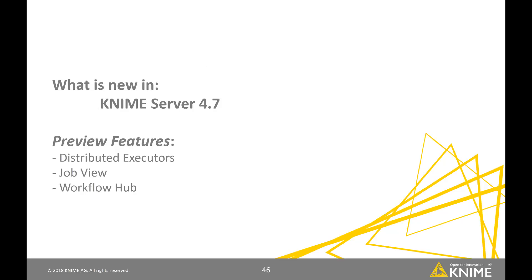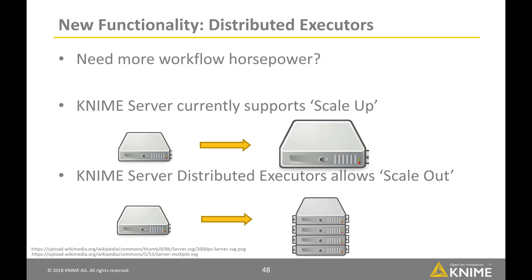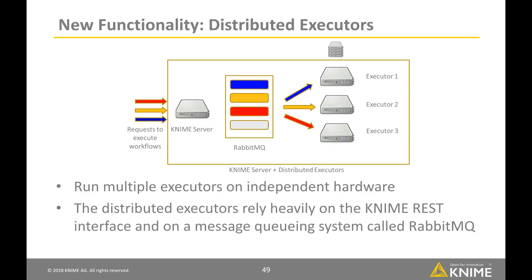With the new release of KNIME Server 4.7, several features are released as preview: distributed executors, job view, and workflow hub. The KNIME distributed executors are almost feature complete — it is now possible to run any KNIME workflow that doesn't contain file, app, and download quick forms on the KNIME Server using distributed executors, scaling concurrent workflow execution well beyond what was previously possible. The idea is not only to scale up by adding more cores to the server machine, but also to scale out using more than one executor on independent hardware. The distributed executors rely heavily on the KNIME REST interface and a message queuing system called RabbitMQ.